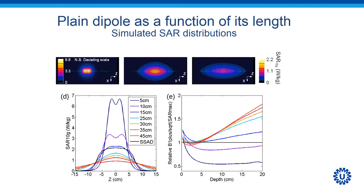If you take a look at the SAR distribution, you can see the same thing happening. For short antennas, the SAR levels at the surface are the highest, while for longer antennas, the SAR levels are much lower. If you take a look at the ratio of B1 plus over the maximum SAR, which is indicated in the second diagram relative to the single-sided adapted dipole antenna, we can see that for a depth of 10 cm, much longer antennas of 30 cm or even longer have the best performance.